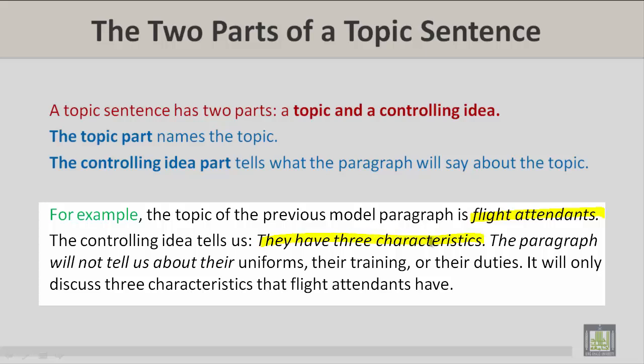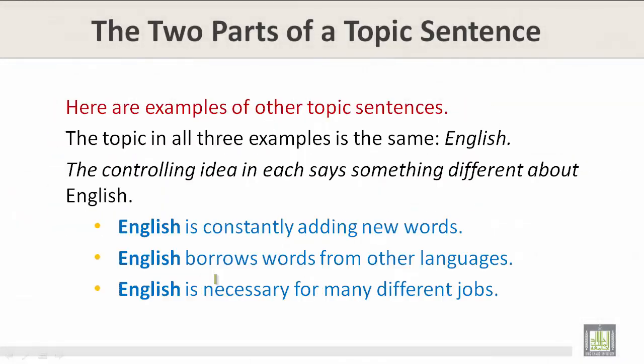The paragraph will not tell us about their uniforms, their training, or their duties. It will only discuss three characteristics that flight attendants have. Here are examples of other topic sentences.